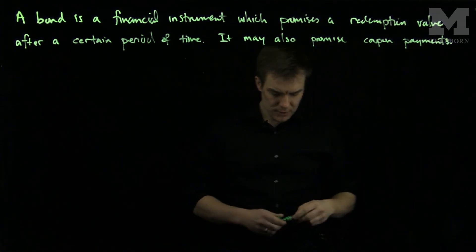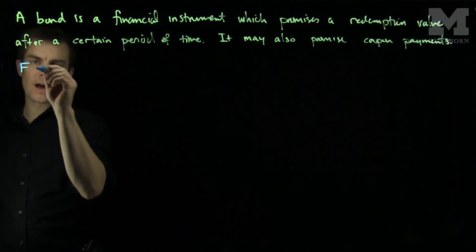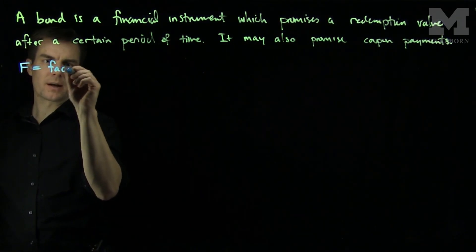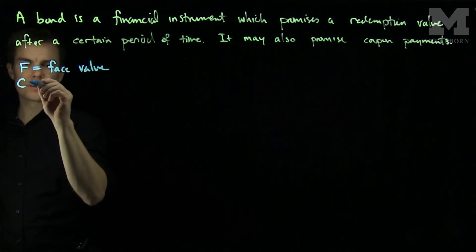So let's address some terminology with bonds. A bond will have a face value of F, this will be the face value of the bond. A bond will have a redemption value C.